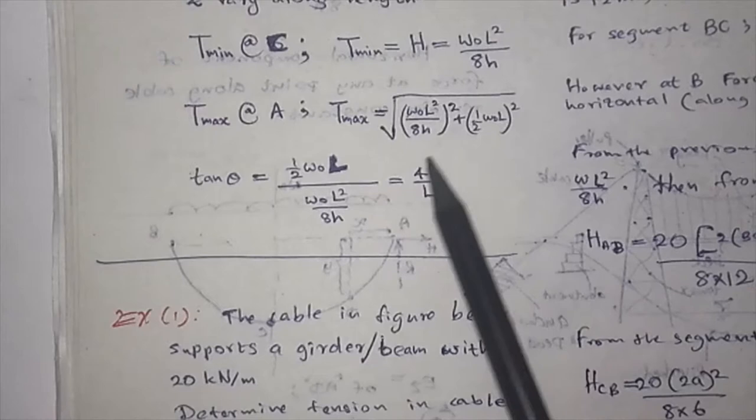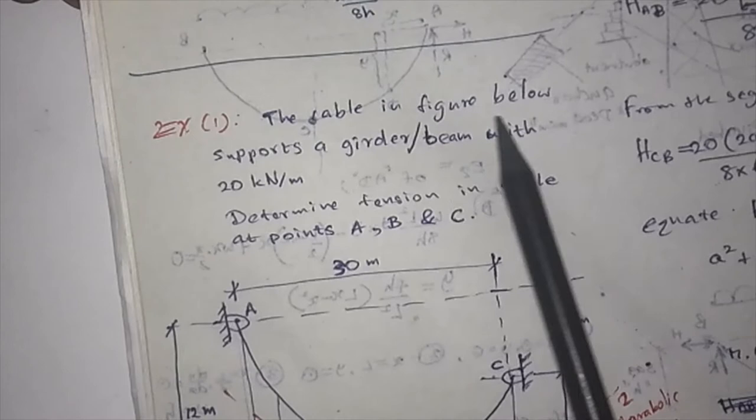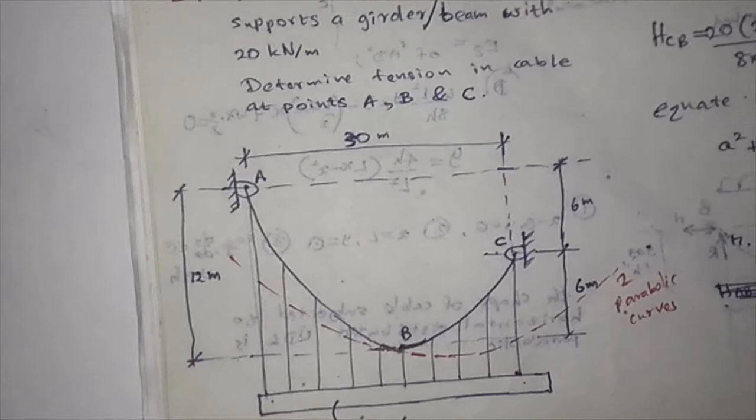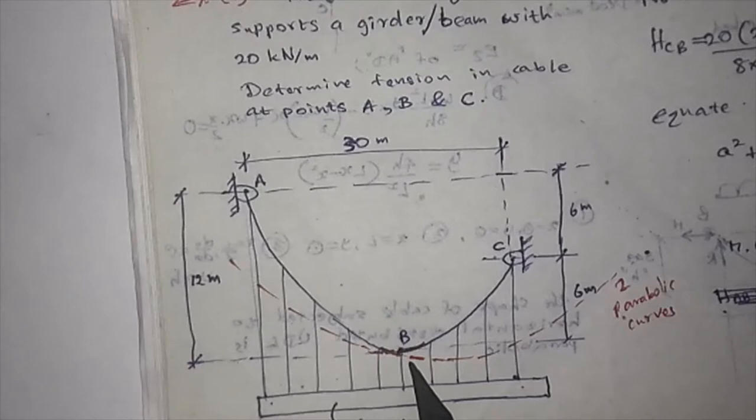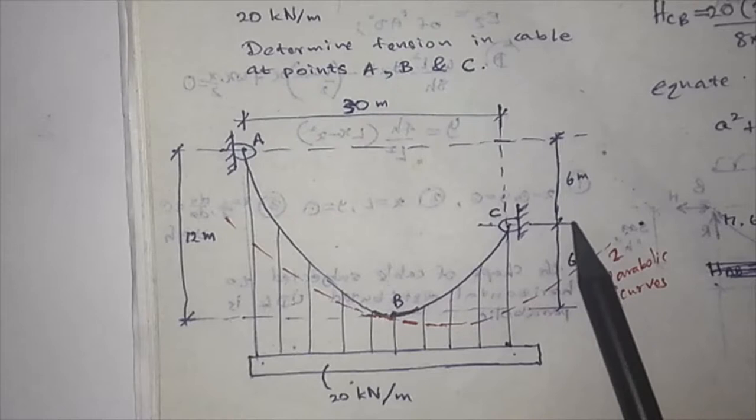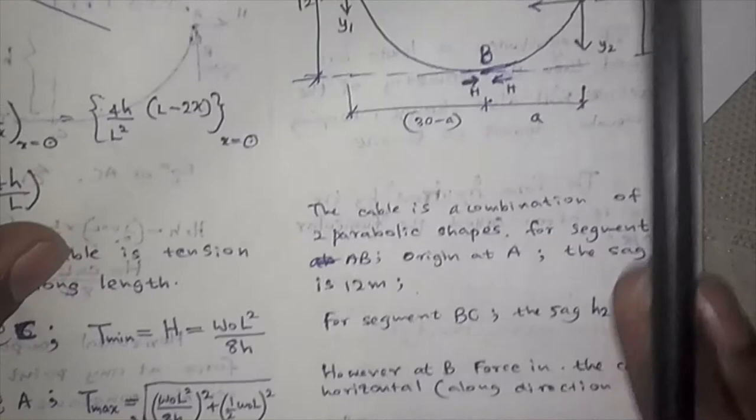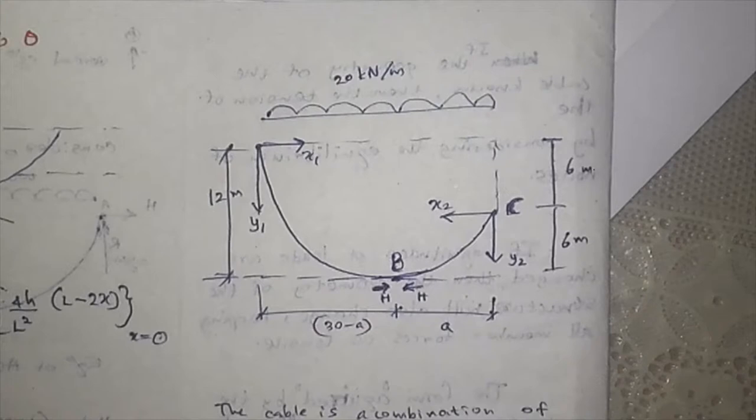So we can have an example. We can go through this example very quickly. The cable in the figure below supports the girder beam with 20 kilonewton UDL. Determine the tension in cable at points A, B, C. These two points are not horizontal—C is below 6 meters.